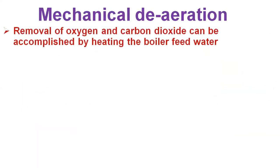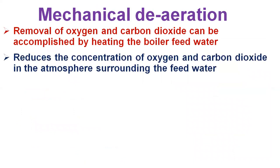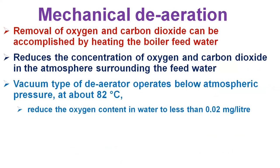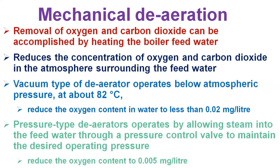Mechanical deaeration for the removal of dissolved gases is typically utilized prior to the addition of chemical oxygen scavengers. Mechanical deaeration is based on Charles's and Henry's laws of physics. Simplified, these laws state that removal of oxygen and carbonic acid can be accomplished by heating the boiler feed water, which reduces the concentration of oxygen and carbon dioxide in the atmosphere surrounding the feed water. Mechanical deaeration can be the most economical, operating at the boiling point of water at the pressure in the deaerator. The vacuum type operates at atmospheric pressure at about 82°C and can reduce oxygen content in water to less than 0.02 mg/L.